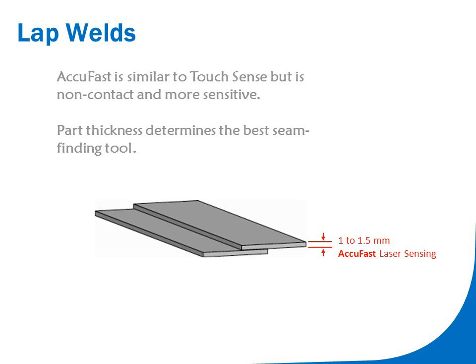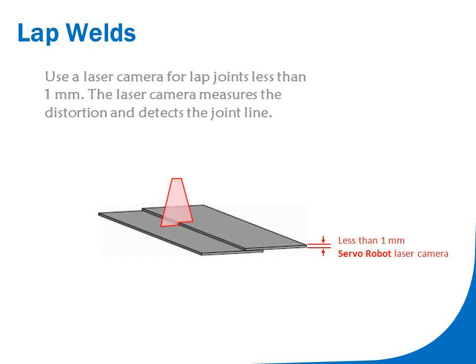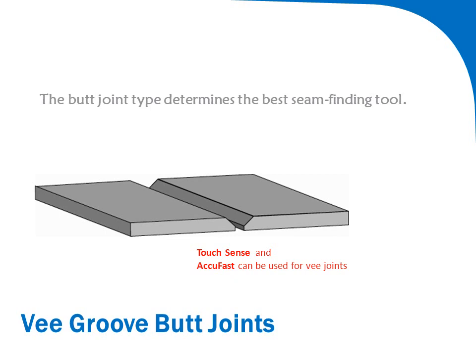AccuFast is used for thinner materials, and the non-contact sensor searches more quickly than touch sensing. Programming utilizes the same macro jobs as touch sensing. Laser cameras find lap joints on very thin parts and provide joint gap data.